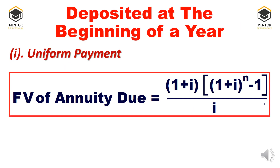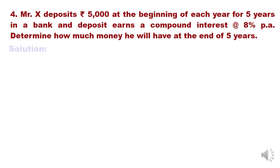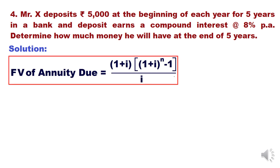There is also a second formula for uniform payment, called the future value of annuity due formula: (1+i) × [(1+i)^n - 1] / i, where i is the interest rate and n is the number of years. Applying this formula to the same question will give the same answer — please keep that in mind.